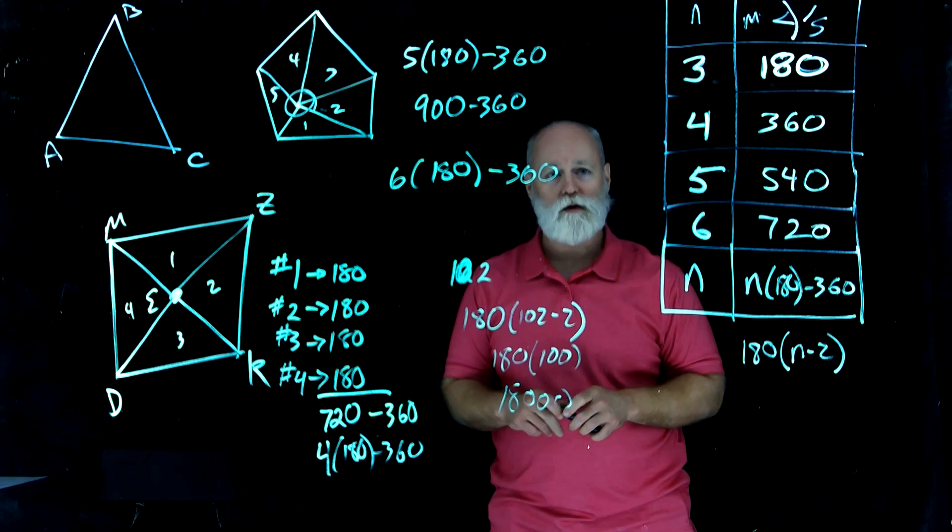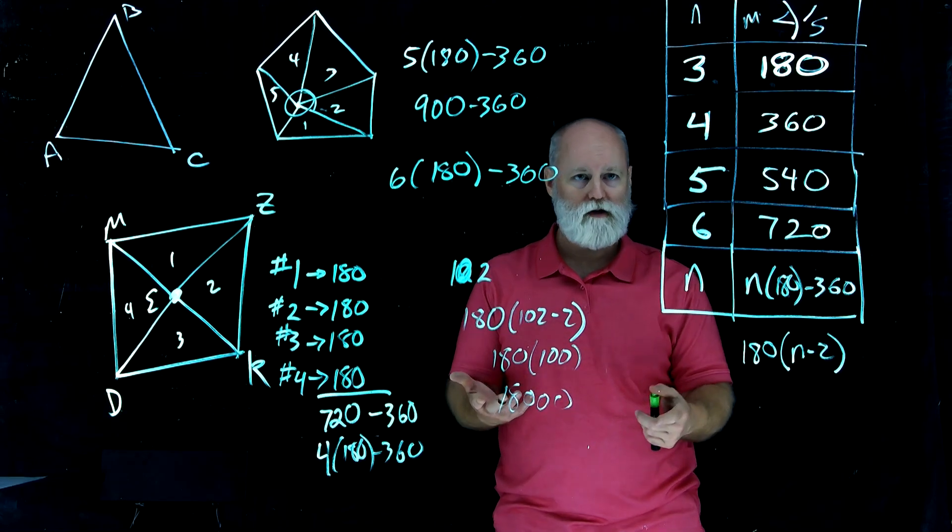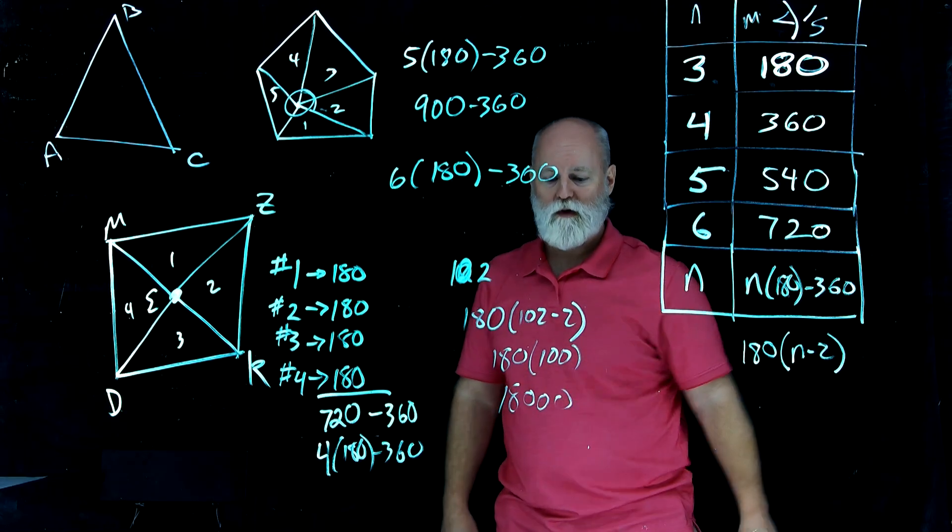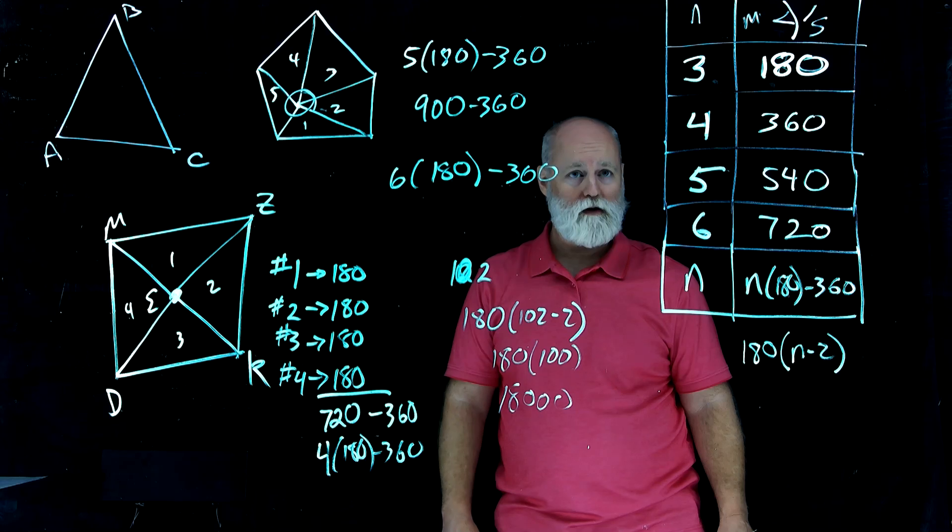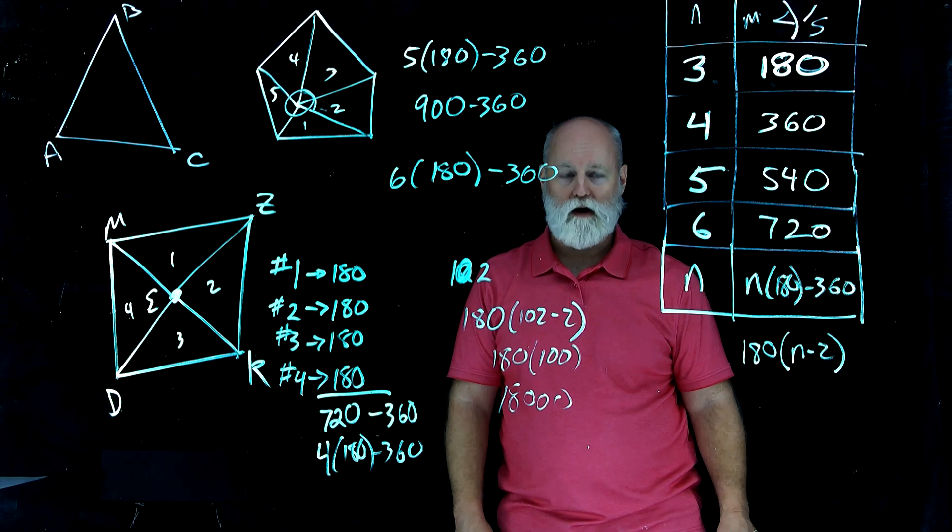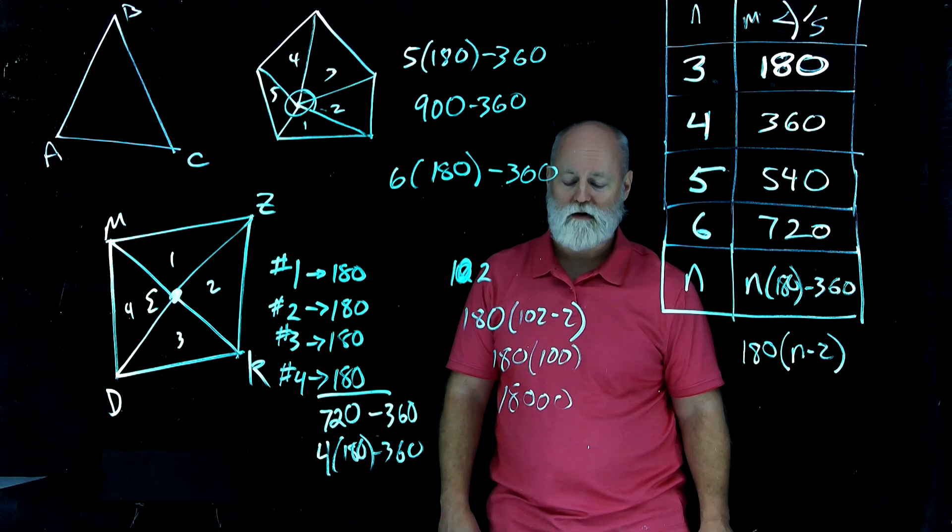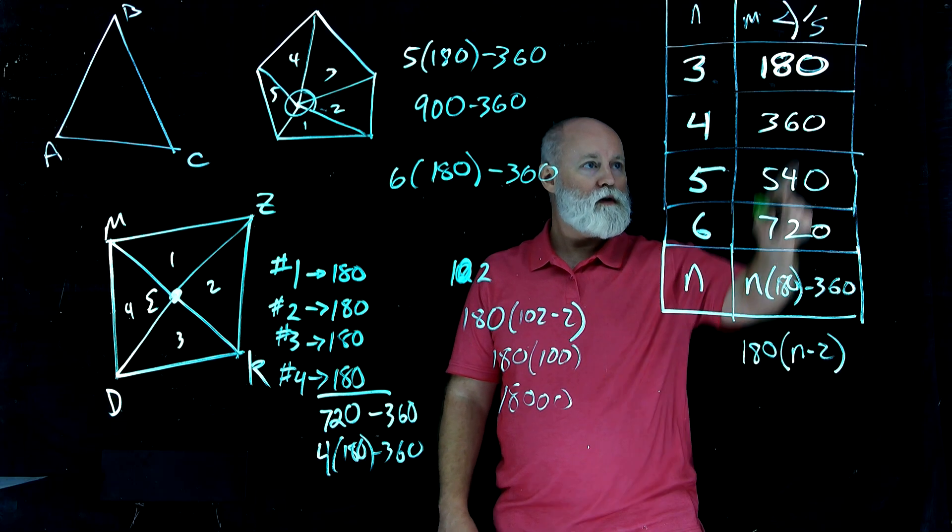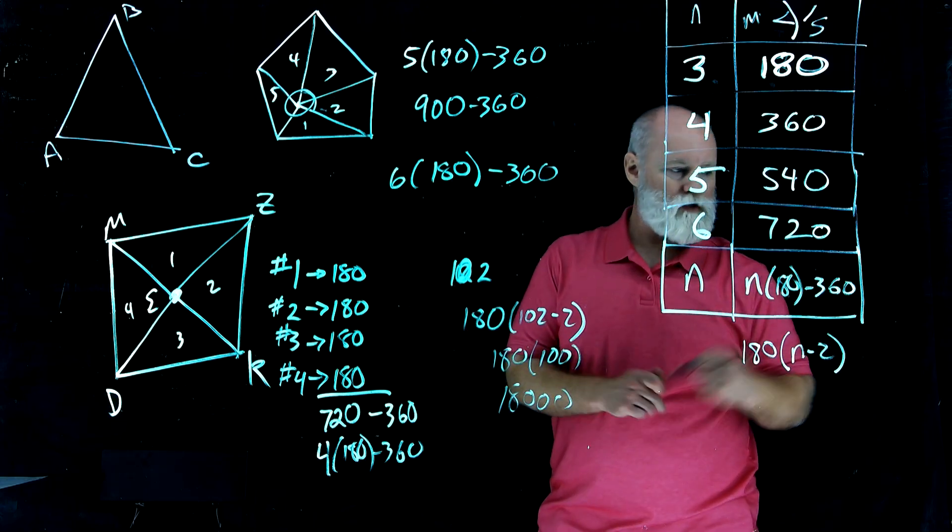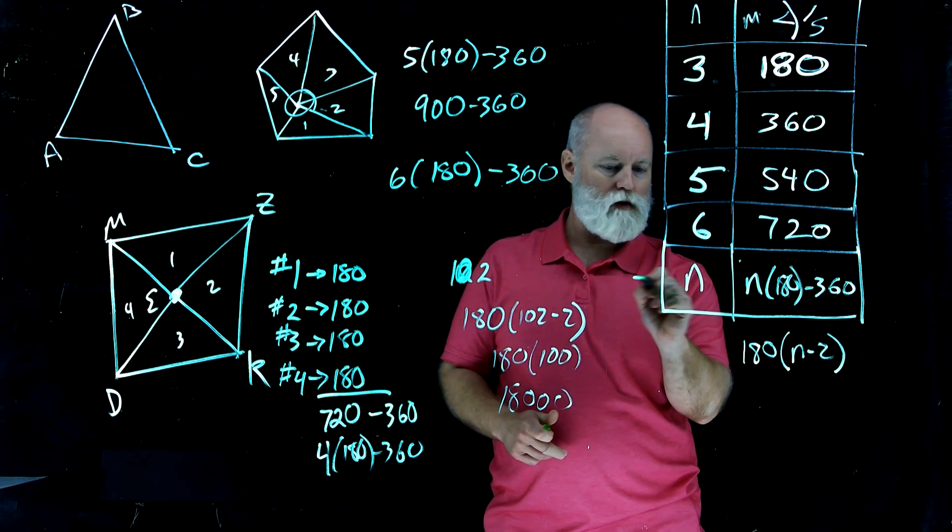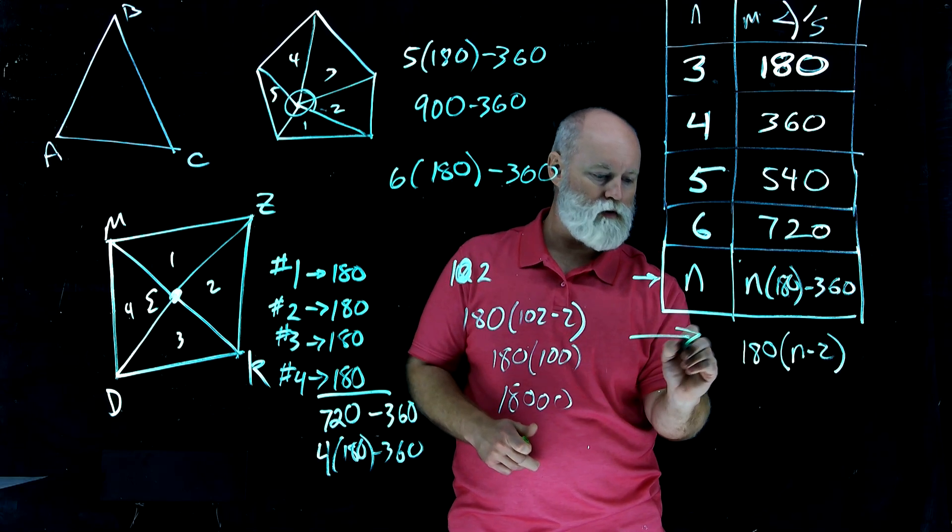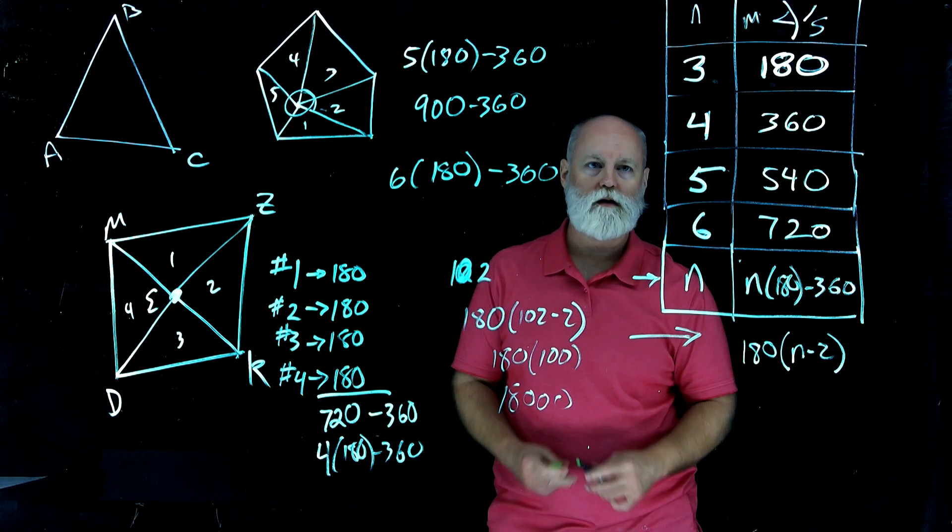Which gives us 180 and then two more zeros. So if we had 102-gon, the sum of the interior angles of that thing would be 18,000 degrees. Wow, that's a lot of turning or that's a lot of heat. One of the two, either way.